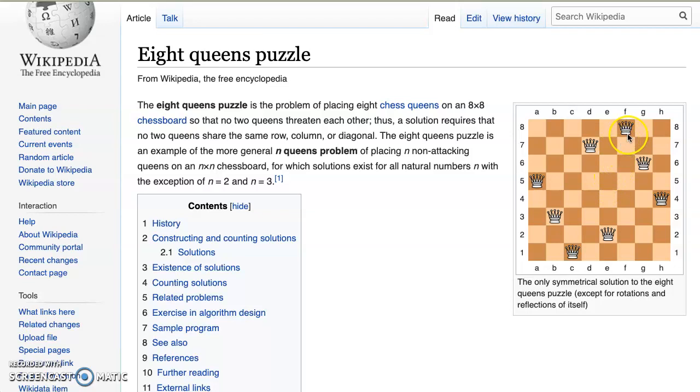We see that, let's say this queen on 8f, there are no queens in its row, there are no queens in its column, and there are no queens in its diagonal. And if you go out and check each one of these queens they all have that same attribute.